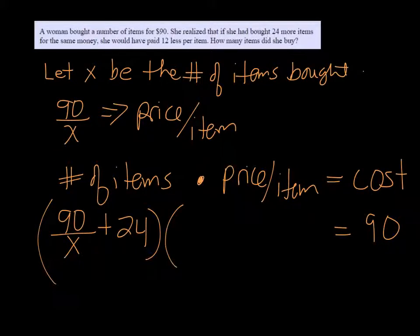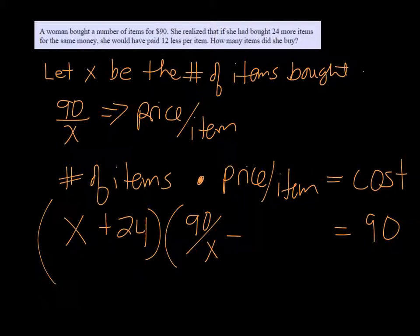And the price per item - oh, my apologies, this should just be X - plus the number of items she bought, plus 24 more, and then times the price, which would have been reduced by $12 if she'd bought the additional 24.